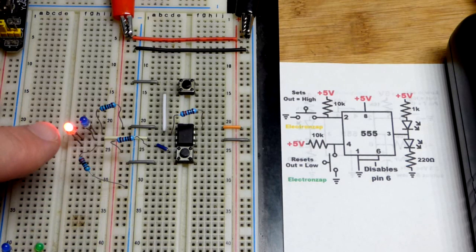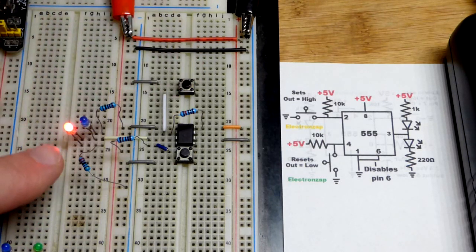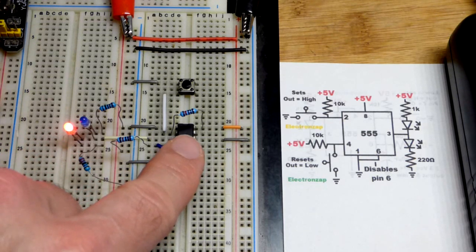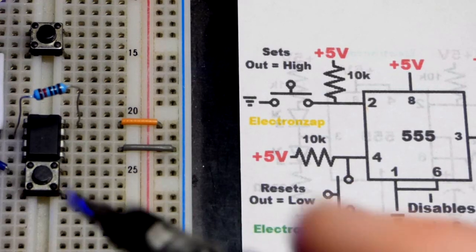So now the output is high. That was the set pin. The output is high. It's going to stay, it's stable in two states until you force it to change.